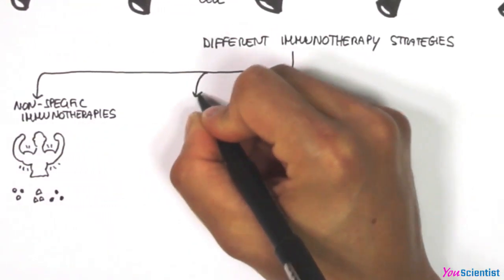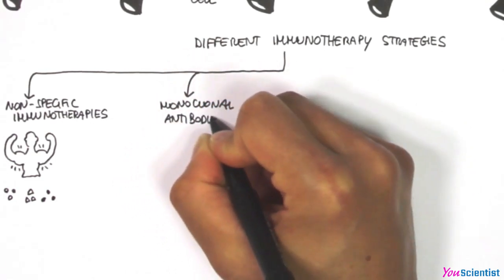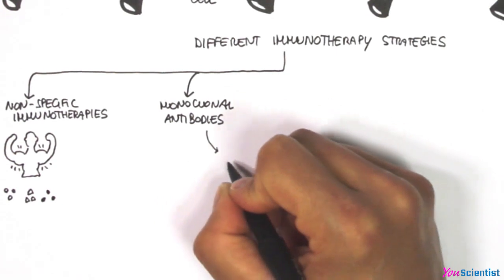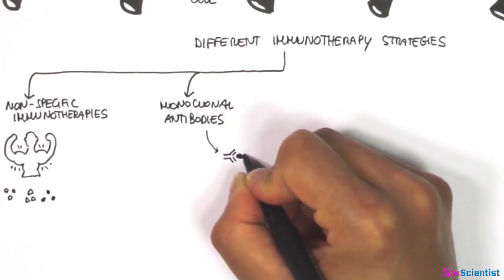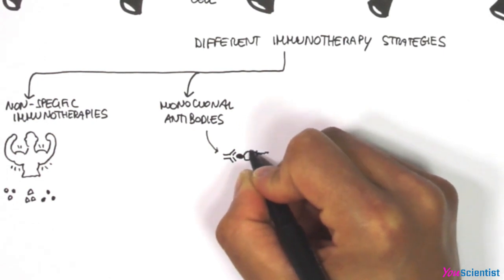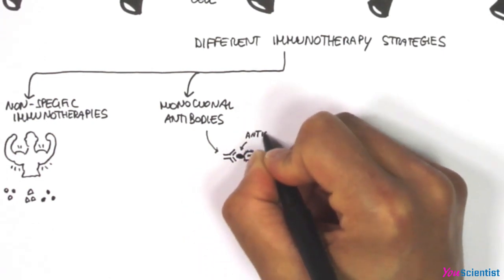Another strategy relies on monoclonal antibodies. Antibodies are produced by the immune system and travel along the body to recognize specific proteins named antigens. Once the antibody binds the antigen, other components of the immune system are recruited and remove exogenous cells carrying the antigen.